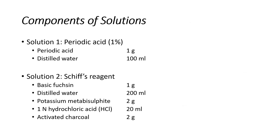Composition of solutions: We use two solutions — the periodic acid solution and the Schiff solution. For the periodic acid solution we use periodic acid and distilled water. For the preparation of Schiff solution we need basic fuchsin, distilled water, potassium metabisulfite, one normal hydrochloric acid, and activated charcoal.